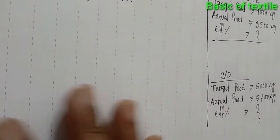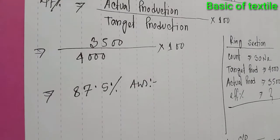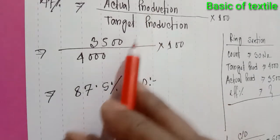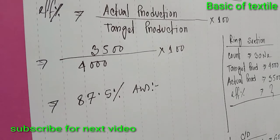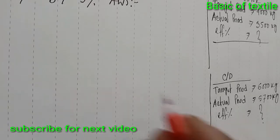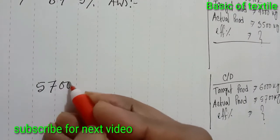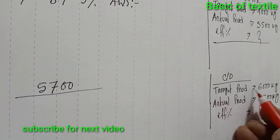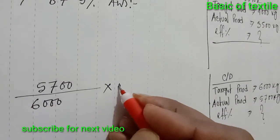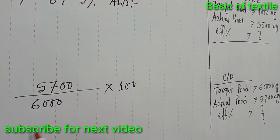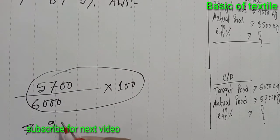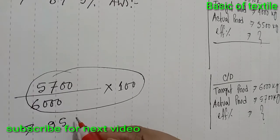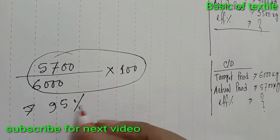Again, efficiency percent equals actual production divided by target production into 100. The actual production is 5,720 and target was 6,000, into 100. The achieved efficiency is 95%.